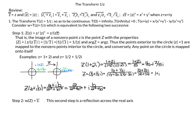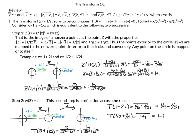Step two: w of z takes the capital Z from step one and returns its complex conjugate, which is a reflection across the real axis. Continuing the examples: the green point 1/2 plus 1/2 i became 1 plus i in step one, and after taking the complex conjugate becomes 1 minus i. The blue point 1 plus 2i became 1/5 plus 2/5 i, and after the conjugate becomes 1/5 minus 2/5 i. Both are reflections across the real axis.